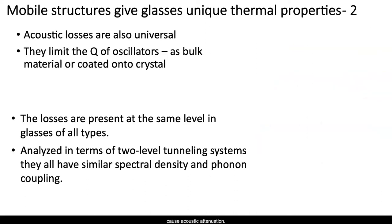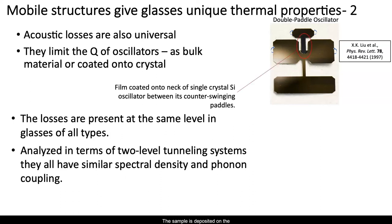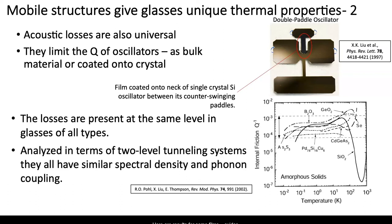As you might expect, these mobile structures also cause acoustic attenuation. This can be easily observed when glasses are used as components in oscillators. Films are often measured by depositing onto a single crystalline silicon wafer cut into a double paddle configuration. The sample is deposited on the neck between the counter-swinging paddles, where it can be torqued. It's remarkable that the losses measured this way are almost independent of the type of glass — oxides, chalcogenides, metallic. Even looking at a wider range including polymers and molecular glasses, these losses are ubiquitous and similar in all, both in their spectral density and in their coupling to phonons. People care about them: these glassy states limit the sensitivity of LIGO and its cousins — gravity wave detectors — and they compromise the reliability of quantum computing schemes.